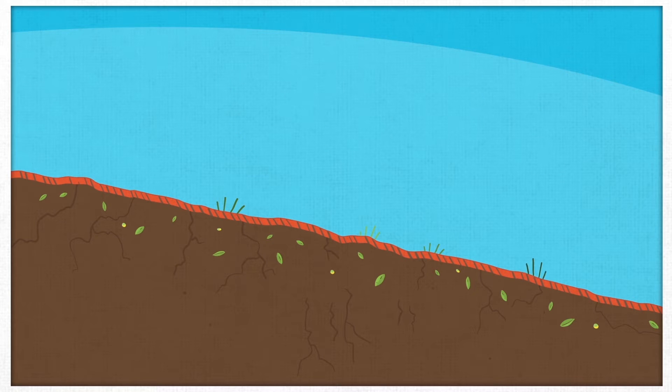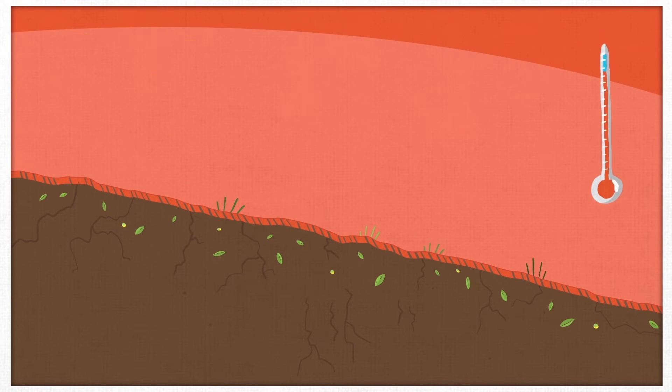Vegetation hardly emerges, and the hot, dry air no longer triggers rainfall.